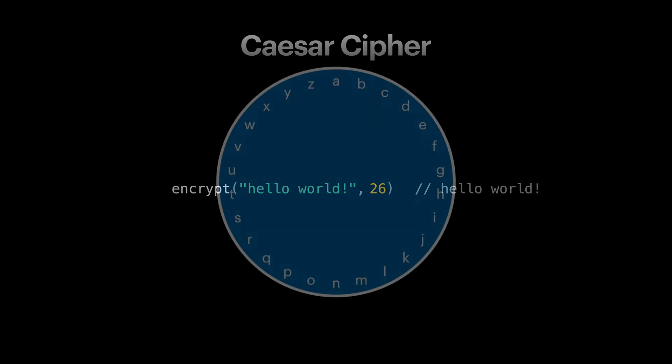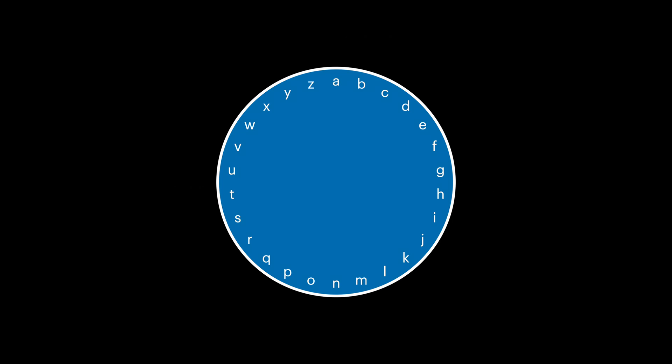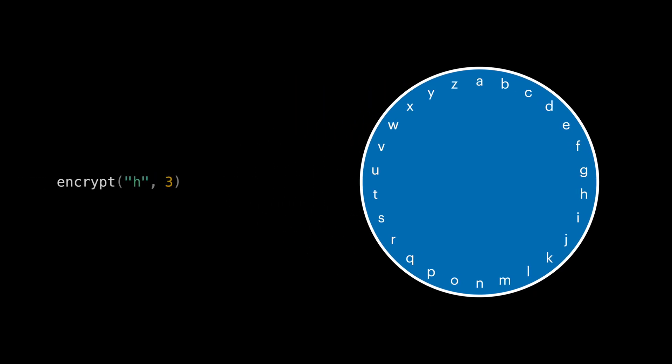In order to see why, imagine placing all the English alphabets in order on a border of a circle. As an example, let's take a character like h and encrypt it with three. Moving three steps on our circle, we can easily see encrypting h returns the character k.